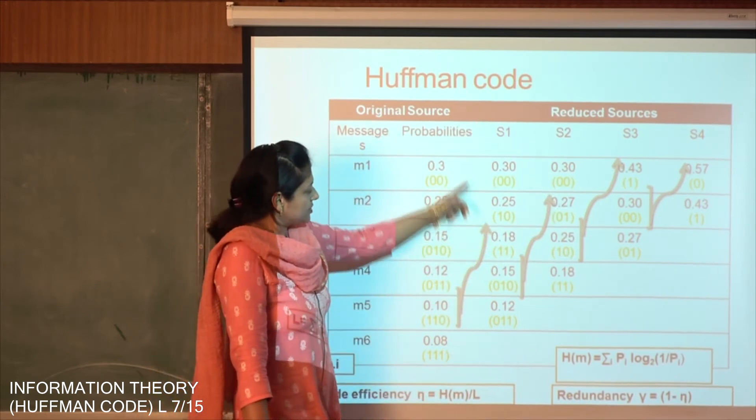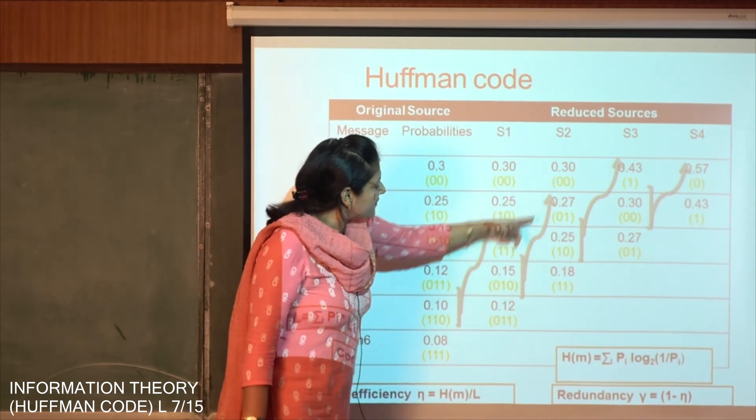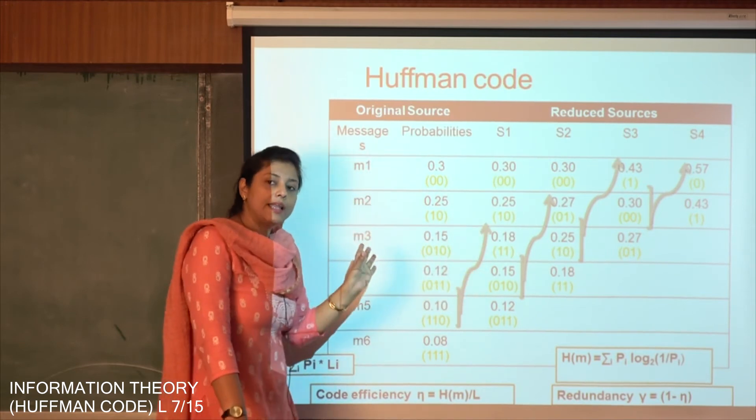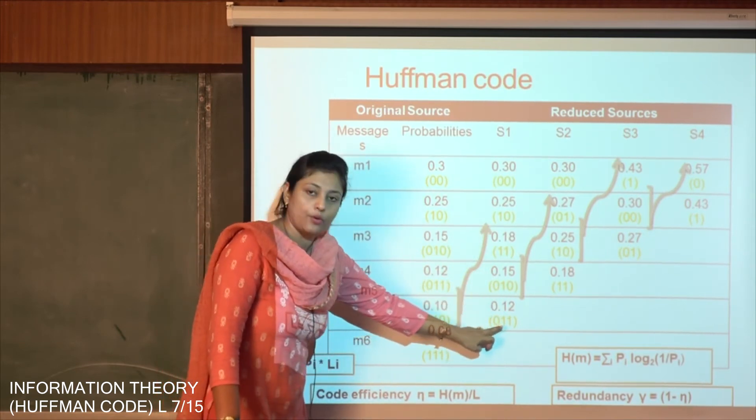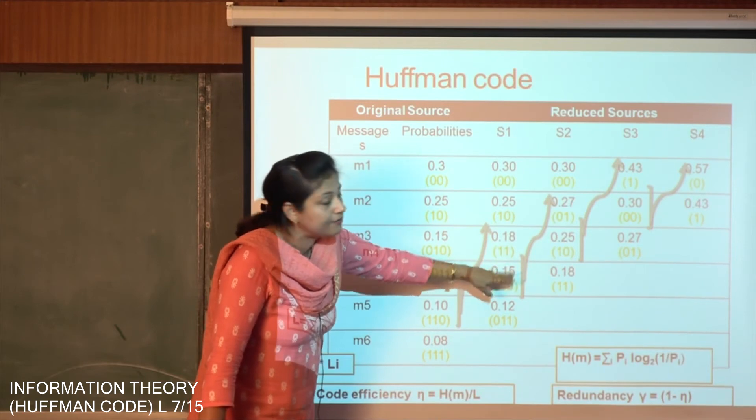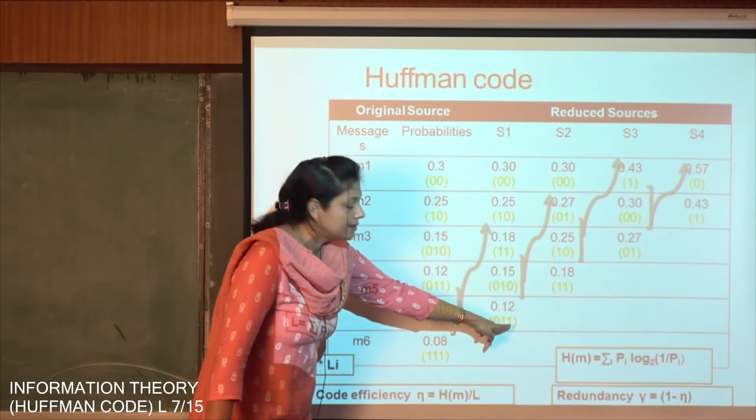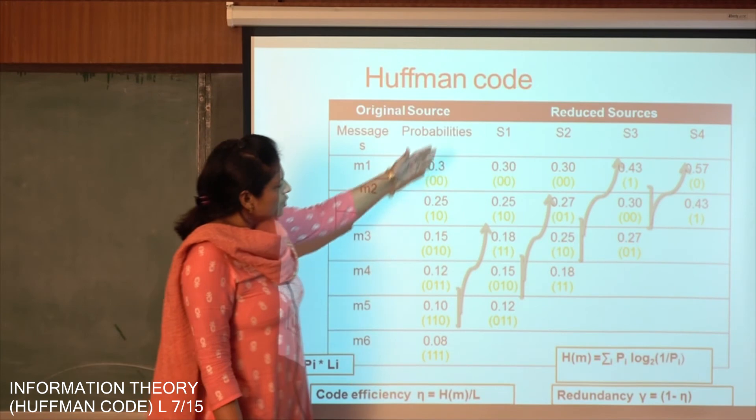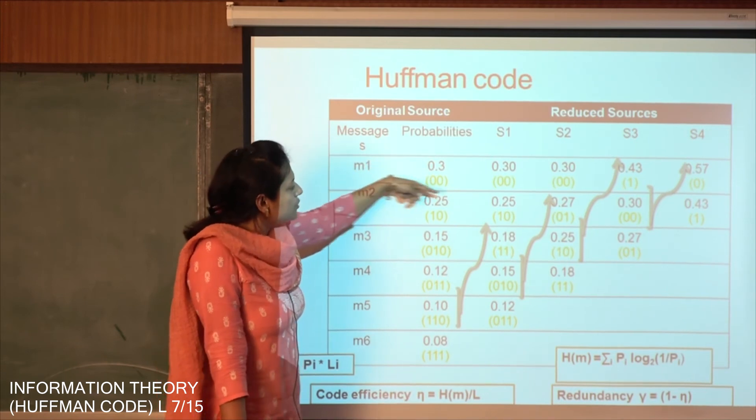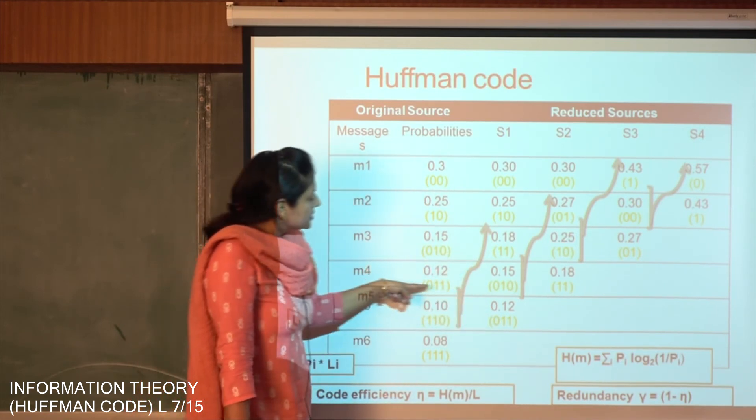Next we go to the S1 reduced state. You see here 0.3 is already done, so it is 00. Now 0.27 has been obtained from these two. So this 0.27 is 01. Again in order to encode the right most digit, 0.15 is above, so we encode the right most bit with 0 and 0.12 is below it, so we encode it with 1 at the right most digit. So we have obtained all the encoding digits: 0.3 is 00, 0.25 is 10, 0.15 is 010, 0.12 is 011, 0.10 is 110 and 0.08 is 111.